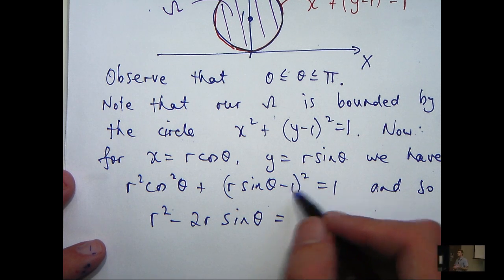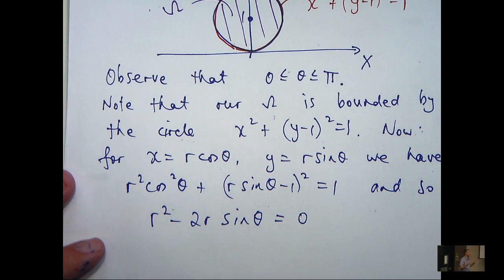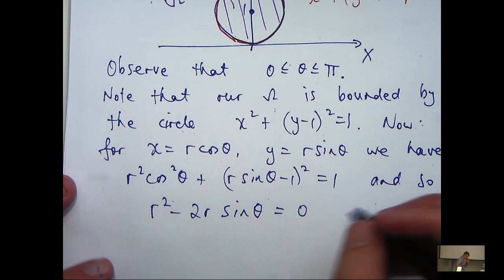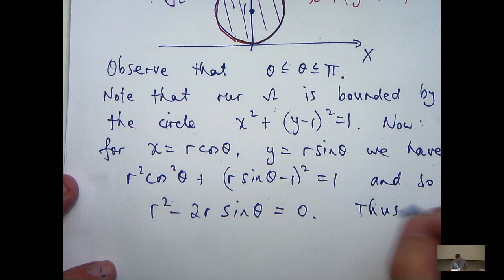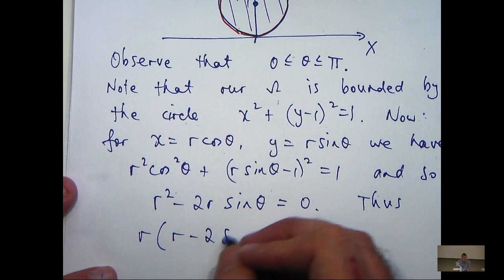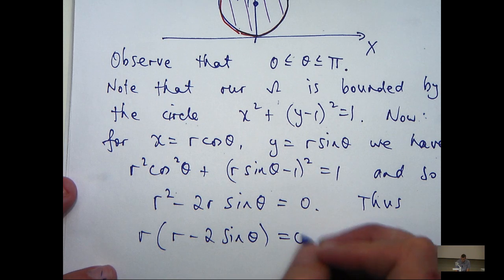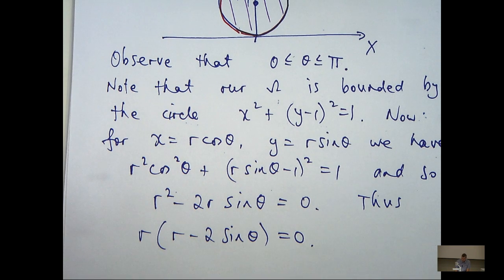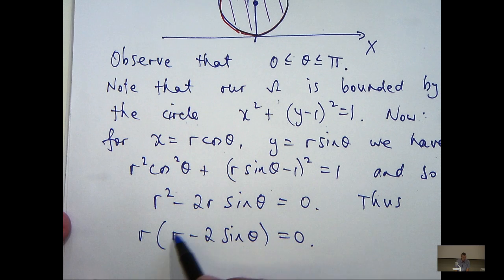Now, when I expand the 1 out here, I can cancel those off. So, I'll get the 0 on the right-hand side. So, factorizing, I'll get the following. Now, either r equals 0 or r minus 2 sine theta equals 0.